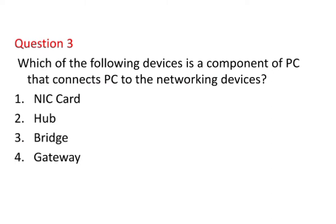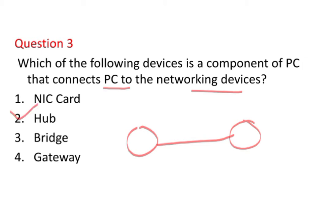The next question is: which of the following devices is a component of a PC that connects the PC to the networking devices? Options are hub, NIC card, bridges, or gateway. Hub, bridge, and gateway are networking devices used to connect different networks. But the question asks specifically about a PC-to-PC connection component, so the right answer is option number one — NIC card, which stands for Network Interface Card.